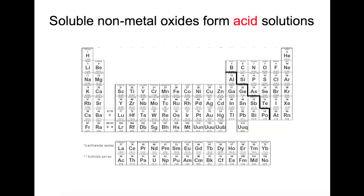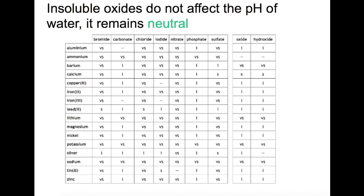To make an acid you need to use a soluble non-metal oxide. Non-metals are found in this region of the periodic table. If your oxide is insoluble it will not affect the pH of water as it does not dissolve and it will remain neutral. If you have a metal oxide you can find out if it is insoluble using this table here on page 8 of your data book.